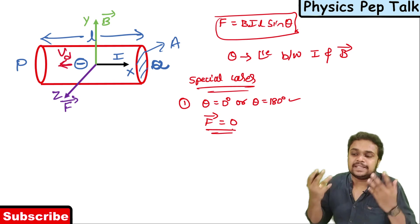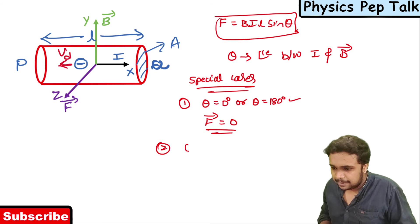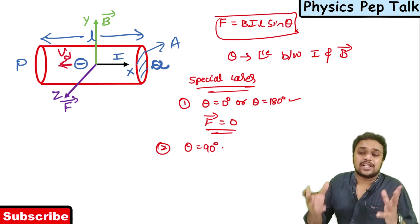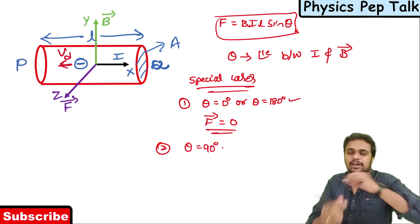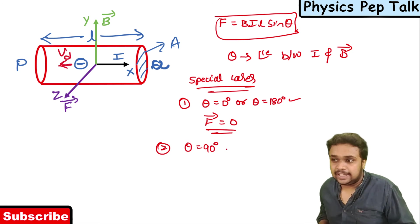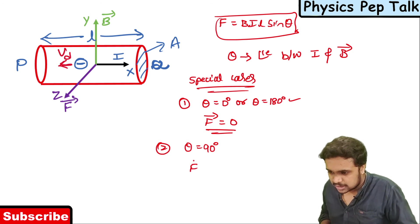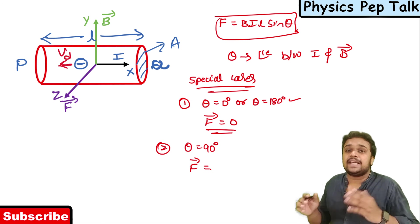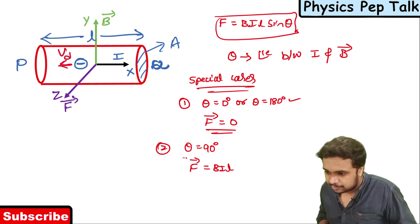No force will be felt by the conductor. Second case: if the conductor is placed perpendicular to the direction of the magnetic field, then theta equals 90 degrees. Since sine 90 equals 1, the total force experienced by the conductor will be equal to B I L.